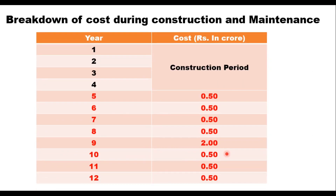The same applies to maintenance cost. If the project period is 20 years, allocate money for each year depending on the requirement. After the initial four-year construction period, in year five you may need 50 lakh rupees; in years six and seven also 50 lakhs each; but in year nine, a major maintenance of 2 crores (200 lakhs) may be required — and this cycle repeats for the remaining period.